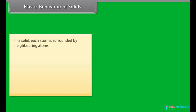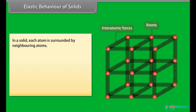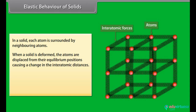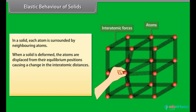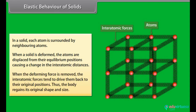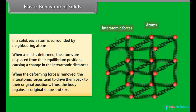In a solid, each atom is surrounded by neighboring atoms. When a solid is deformed, the atoms are displaced from their equilibrium positions, causing a change in the interatomic distances. When the deforming force is removed, the interatomic forces tend to drive them back to their original positions. Thus, the body regains its original shape and size.